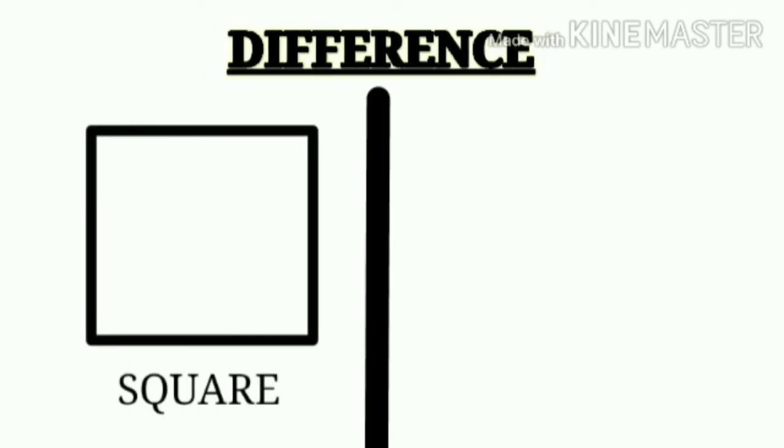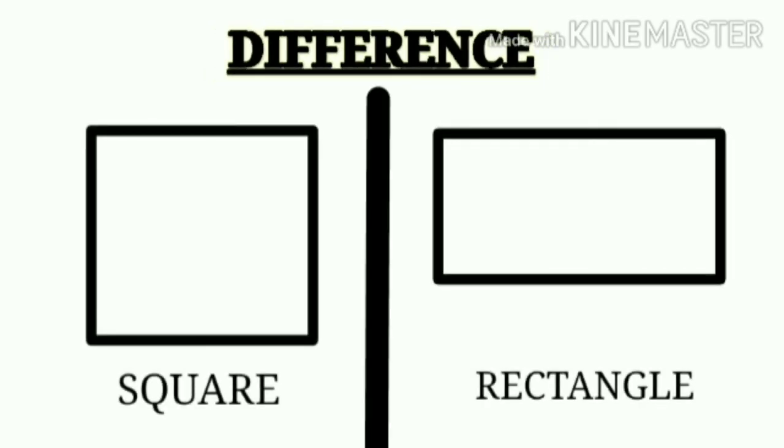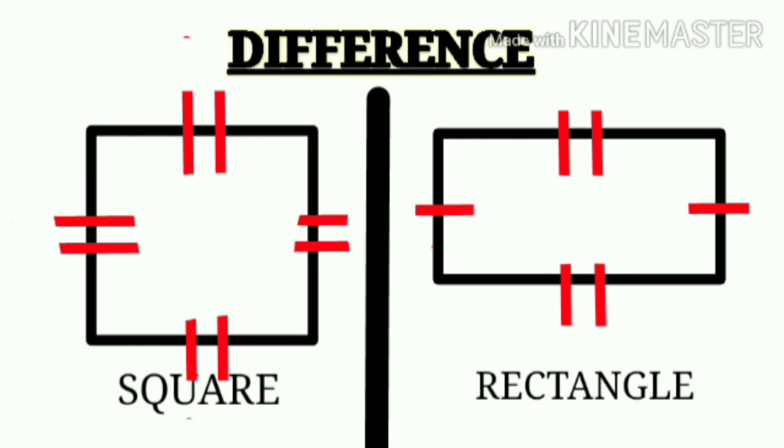The major difference between square and the rectangle is all the sides of the square are of equal length, while in a rectangle, only opposite sides are equal.